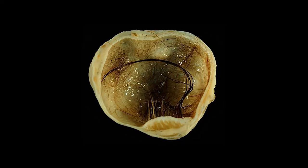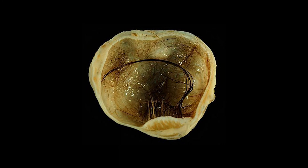Here is a gross specimen showing a tumor with cartilage and various components derived from different germ layers — that mix of tissue types confirms this is a teratoma, though we cannot determine from gross appearance alone whether it is mature or immature.